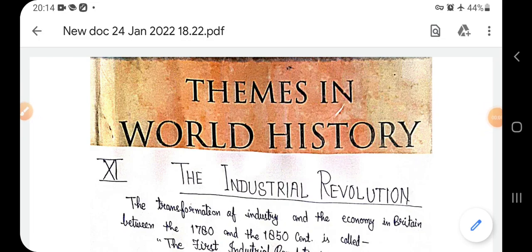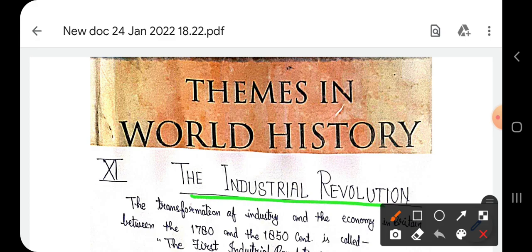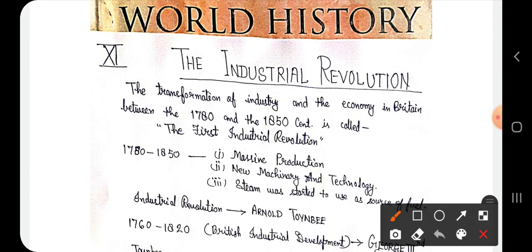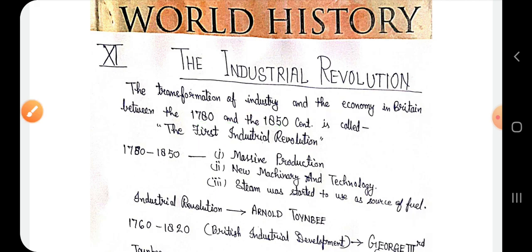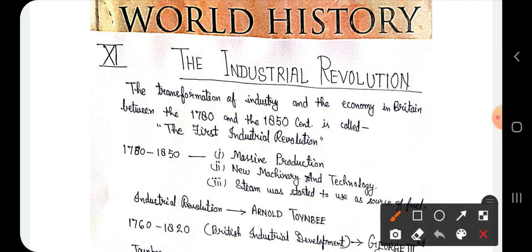Hello students. Today we shall start the new chapter, that is the Industrial Revolution. The transformation of industry and economy in Britain between 1780 and 1850 is called the First Industrial Revolution. This means the First Industrial Revolution occurred in Britain first of all.